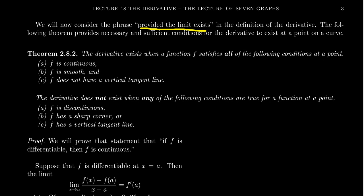So are there conditions for which we can expect the derivative to exist on a function? The answer is yes, and that's what I want to talk about in this video: what conditions are necessary or sufficient to guarantee the existence of the derivative. It turns out there are only three things we have to look for if we look at the graph of a function. The derivative exists when a function f satisfies all of the following three conditions at a point.